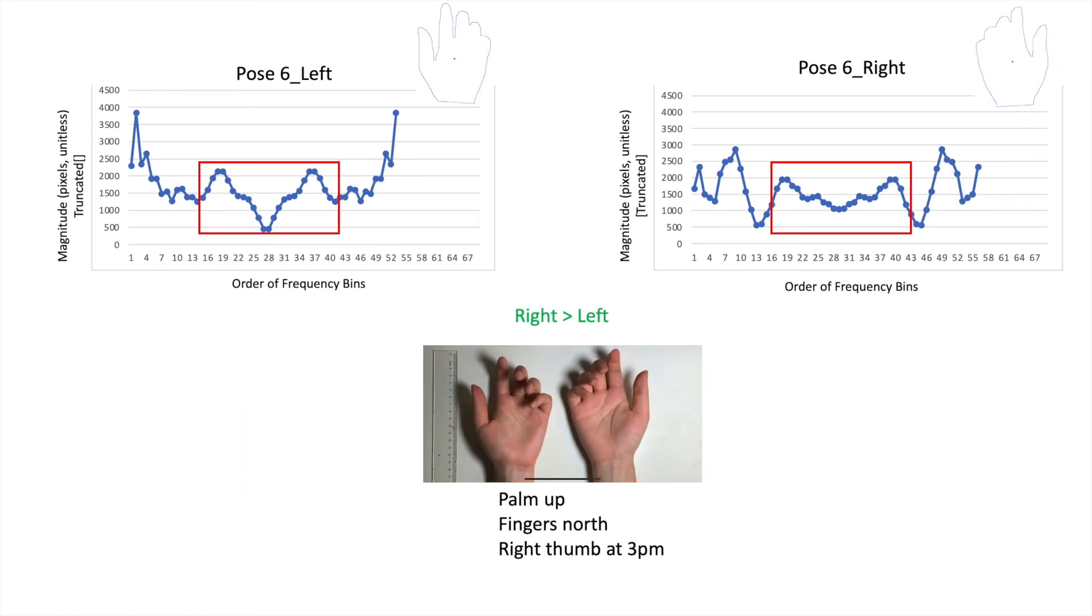Here is pose 6. For pose 6, the palms are up, fingers are north, meaning they point up, and the right thumb is at 3pm. The index of summing the bars in red shows that right is still greater than left.